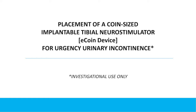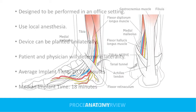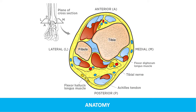The procedure to implant ECOIN for OAB was designed to be performed in an office setting, under local anesthesia. Device implantation is unilateral; site laterality is determined by the surgeon and patient. ECOIN works to treat refractory overactive bladder syndrome by stimulating the tibial nerve. Once inserted, the ECOIN device is situated at the point in the lower leg where the tibial nerve is most superficial.